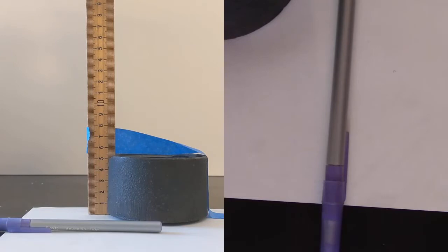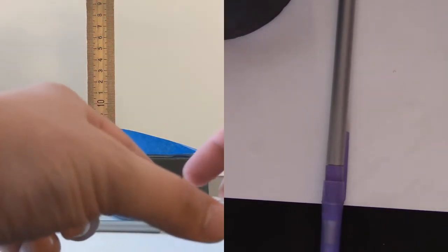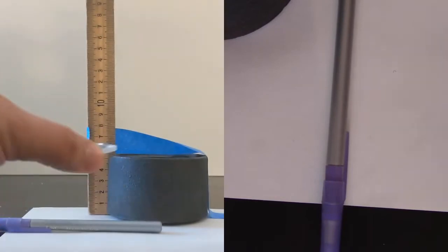we're going to do a really quick demonstration. There's a pen that you can see, hopefully, in the camera. And what I'm going to do is take the 10cm lens and hold it over the pen.